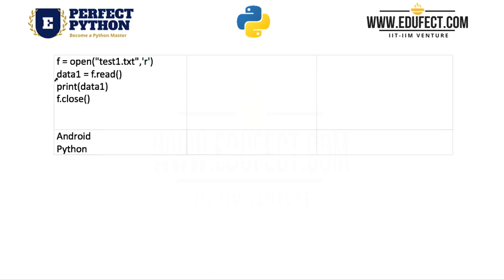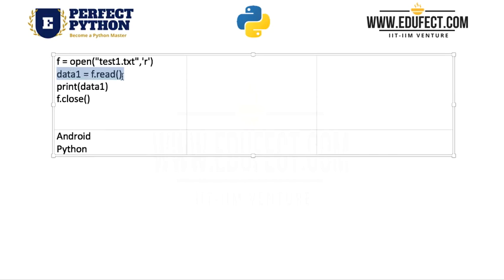Next, we say data1 = f.read(). The f here, which we got after open(), is referred to as the file handle. When we say f.read(), all the contents of the file will be read into f, and when we say print(data1), all those contents will be printed — so 'android python' is what will get printed on the screen. f.close() is important to close all our files, so f.close() closes the file handle we created when we opened the file.